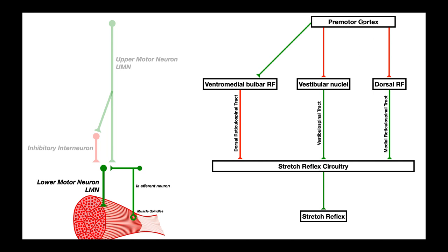With an upper motor neuron lesion, these three descending inputs from the premotor cortex are gone. The premotor cortex can no longer activate the ventromedial bulbar reticular formation, leaving less inhibition on the stretch reflex. It can no longer inhibit the vestibular nuclei and dorsal reticular formation, leading to excessive activation of the stretch reflex. The net effect is an exaggerated stretch reflex, and the overall loss of inhibitory input from the brain leads to spasticity.